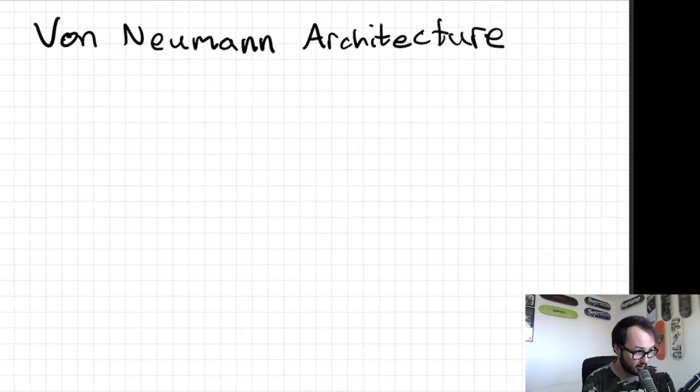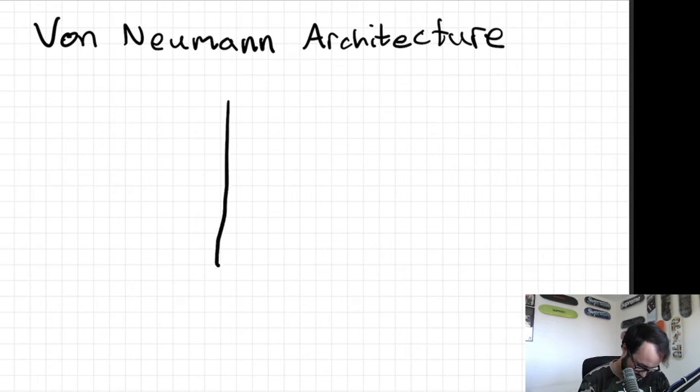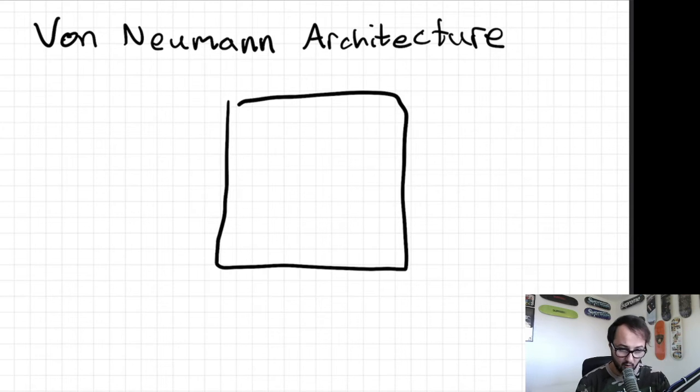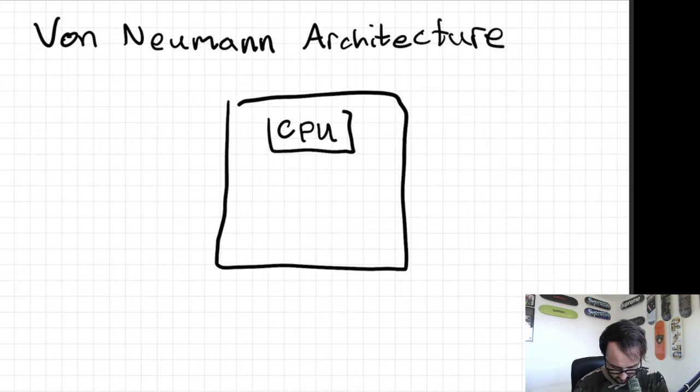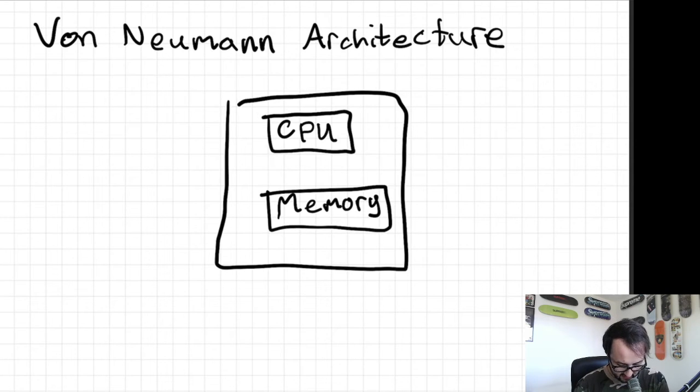So basically, in this architecture, you have a computer. We'll call this your computer right here, this big square. In your computer, you have things such as a CPU, and you have memory, which is attached to your CPU.